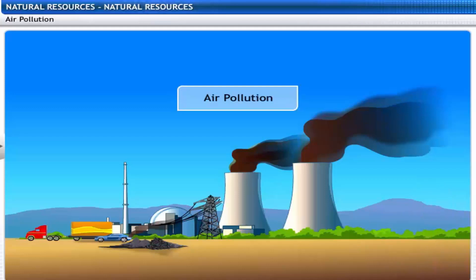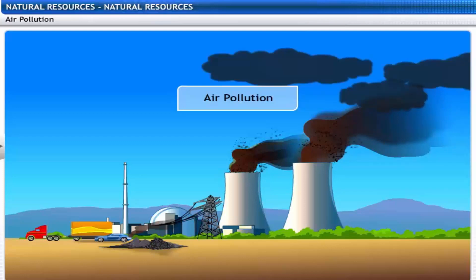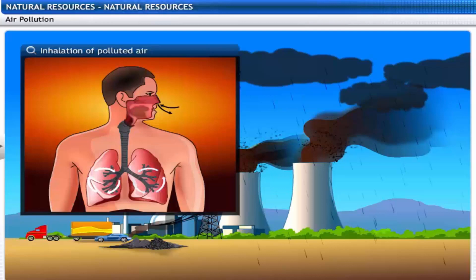Burning of fossil fuels contributes to the addition of suspended, unburnt hydrocarbon particles into the air. Fuels like coal and petroleum also release nitrogen and sulfur oxides. These oxides of nitrogen and sulfur dissolve in air and form acid rain. Breathing of this polluted air causes allergies, cancer and heart diseases.